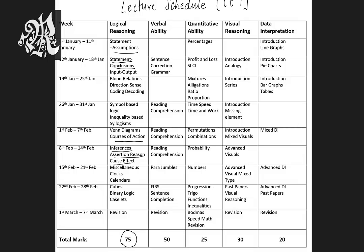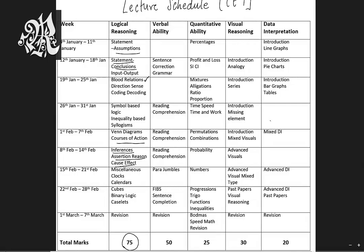Apart from that, you have typical traditional logical reasoning questions on blood relation, direction, coding-decoding. You have clocks, calendars, cubes, symbol-based logic, inequality-based logic, and binary logic. Binary logic can be a new addition this year in CET. You have caselets every time — at least two caselets, so around 10 marks on caselets. This is how you have the entire logical reasoning divided.